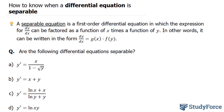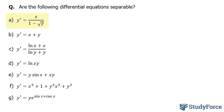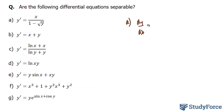The question reads: are the following differential equations separable? Starting with (a), we have y prime is equal to x over 1 minus the square root of y. The first thing we have to do for all of these questions is rewrite them so that instead of y prime we have dy over dx. To tell whether it's separable or not, we'll try to separate the y terms from the x terms.